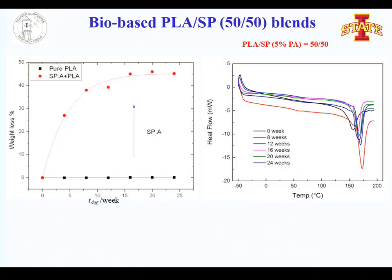This is typical experimental data showing how the material degrades when mixed with soy protein — a 50/50 blend. The x-axis is degradation time in weeks and y-axis is weight loss percent. Polylactide alone shows almost zero percent degradation, but once you add 50 percent soy protein the degradation rate increases dramatically, then levels off after about 15 weeks. Most likely only the soy protein is degrading and the remaining amount is the polylactide.